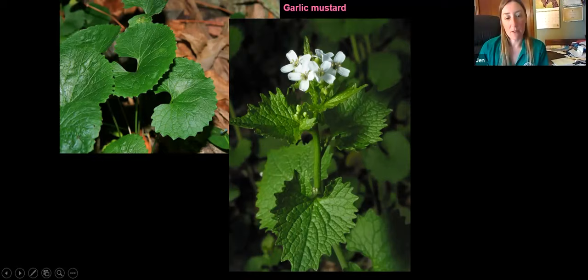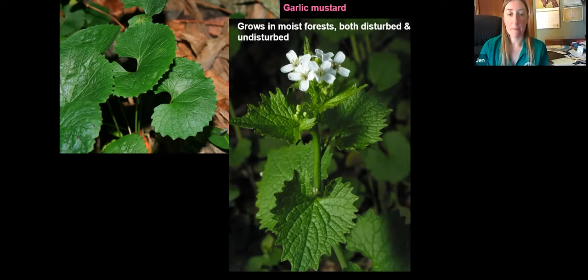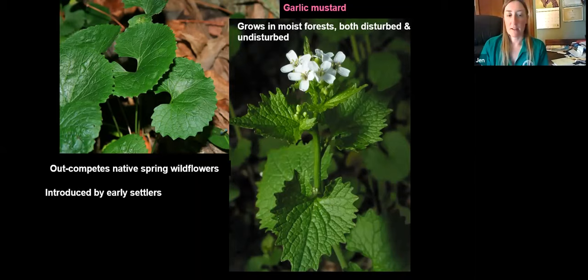This is garlic mustard — an invasive herbaceous ground cover that was actually brought here intentionally by early European settlers as a year-round source of garlic seasoning. In the first year it shows a basal rosette of rounded leaves and is evergreen. In the second year it sends up an upright stalk with flowers, and when it's flowering is the best time to pull it out. This is really one of the only invasive plants that's easy to remove. It grows in mostly moist forests, both disturbed and undisturbed, and can outcompete our native spring wildflowers. The seeds can remain viable for at least five years in the soil, so even if you pull it out, more will keep coming back.